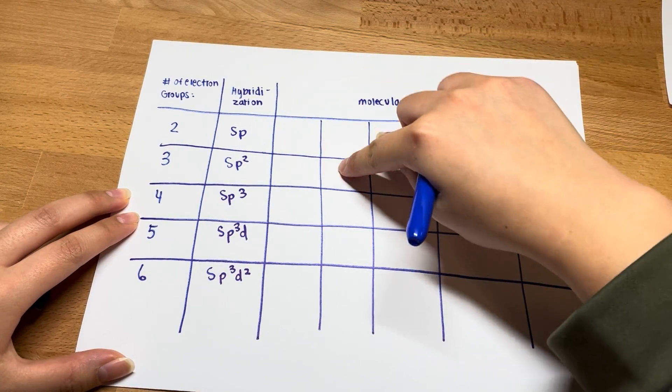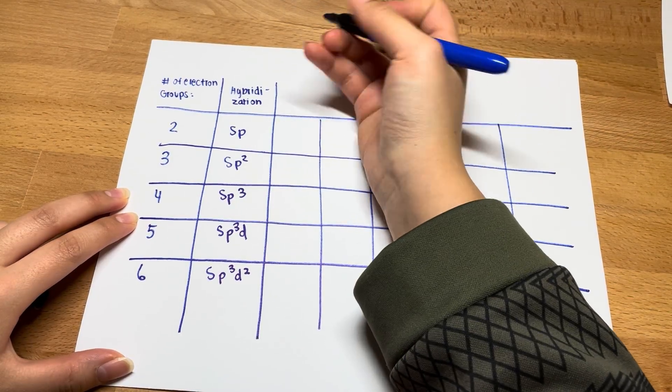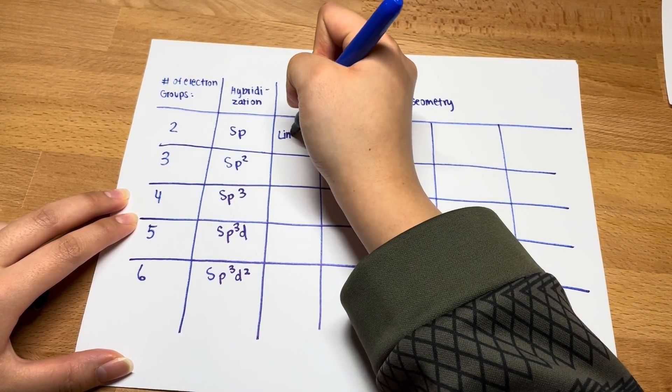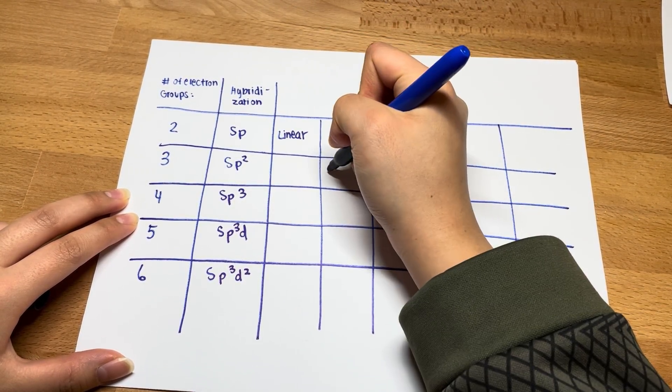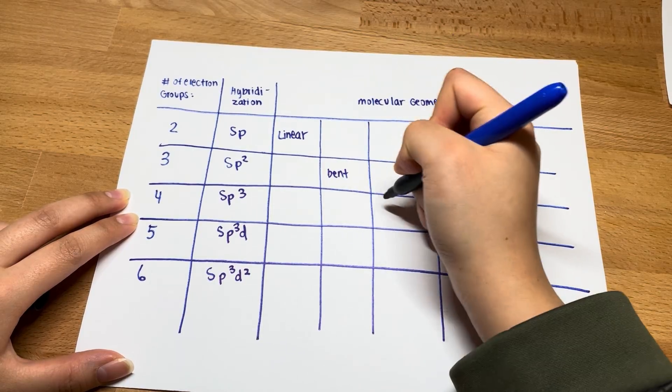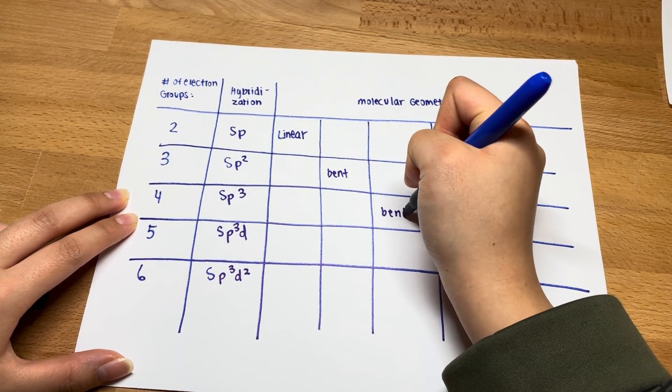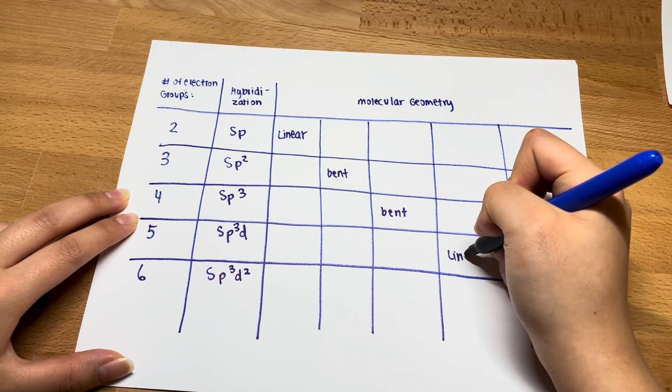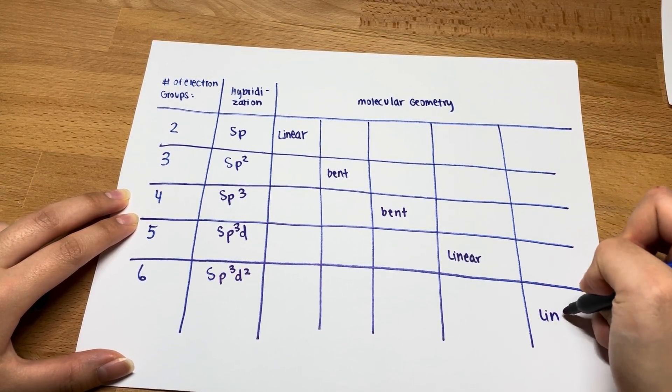Linear, bent, bent, linear, linear. Easy. Linear, bent, bent, linear, linear.